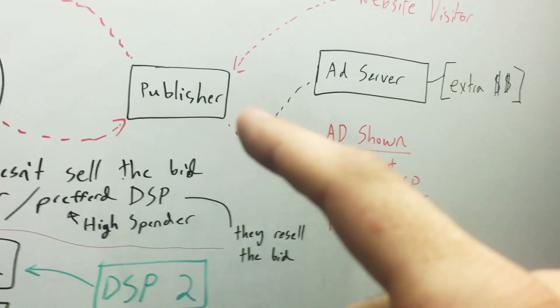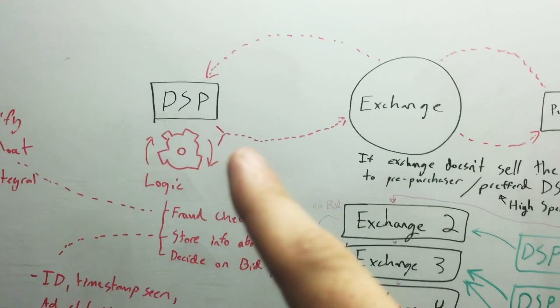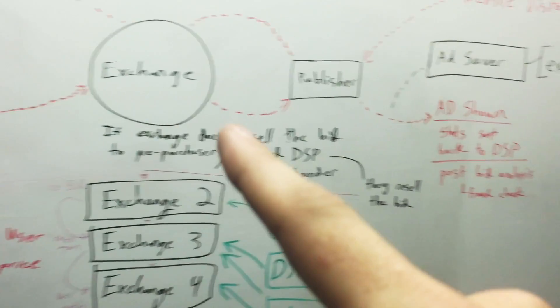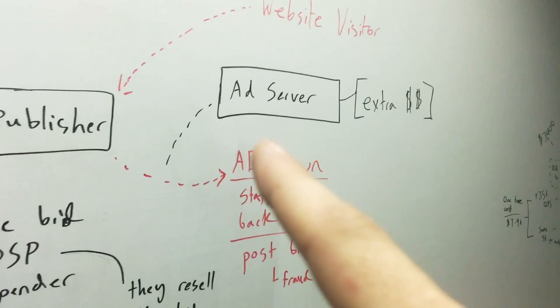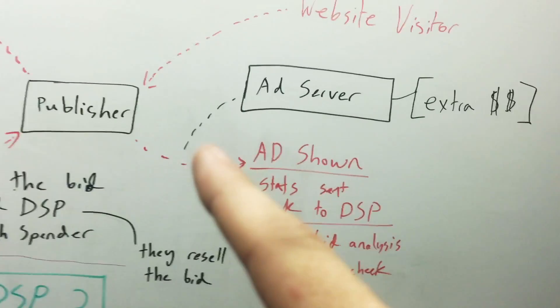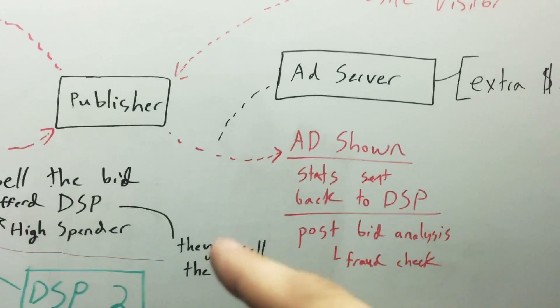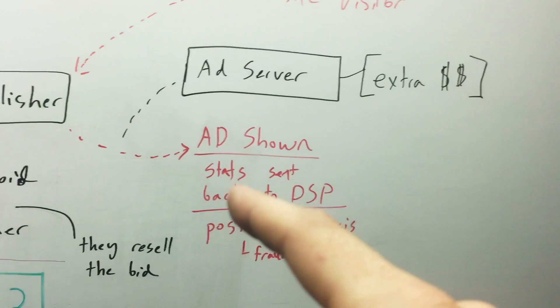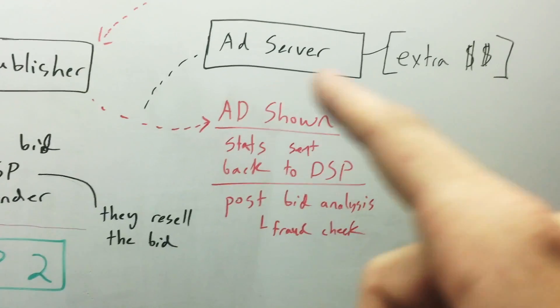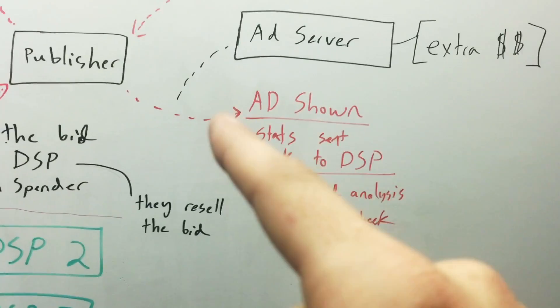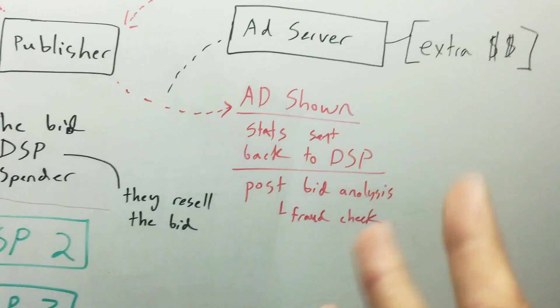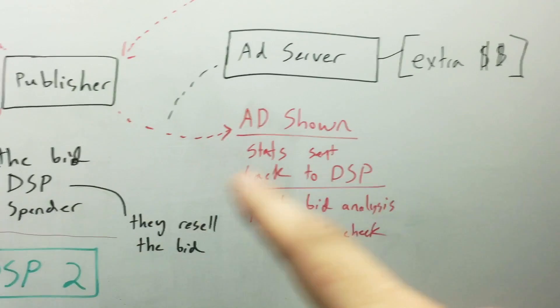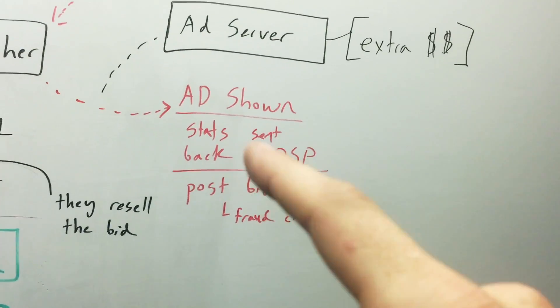So then that finally gets to the publisher, and then you have the ad server. If the DSP has its own ad server and somehow they don't charge you for that, which is really unlikely, then you'll pay for it here. So then you have like maybe Google DCM tags or something like that, and that's where their ads are served from. So the images are loaded, you're charged for bandwidth, you're charged for all sorts of stuff that's extra on top of your CPM again. I would say roughly 15%, like 5 to 15%, and then your ad is finally shown.